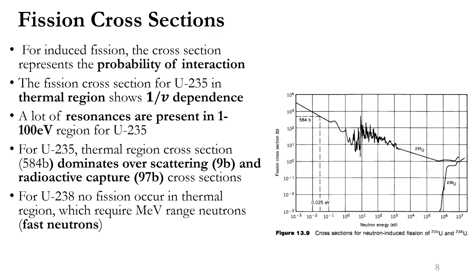The fourth and very important characteristic of nuclear fission is the fission cross-section. For induced fission, the fission cross-section represents the probability of interaction between the inducing particle and the nucleus. For uranium-235, the fission cross-section in the thermal region shows a 1/v dependence — an inverse velocity dependence — meaning as the neutron energy increases, the fission cross-section decreases.